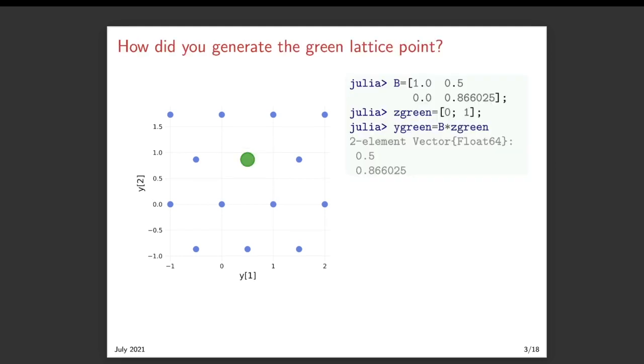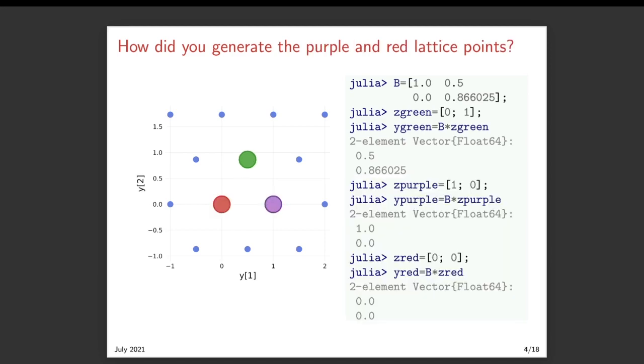The top of the right column, we give a basis matrix for this lattice illustrated in the figure. And the green lattice point shown corresponds to that basis matrix times the vector of integers 0, 1. Here are a couple of other lattice points shown in red and purple and the corresponding integer vectors.